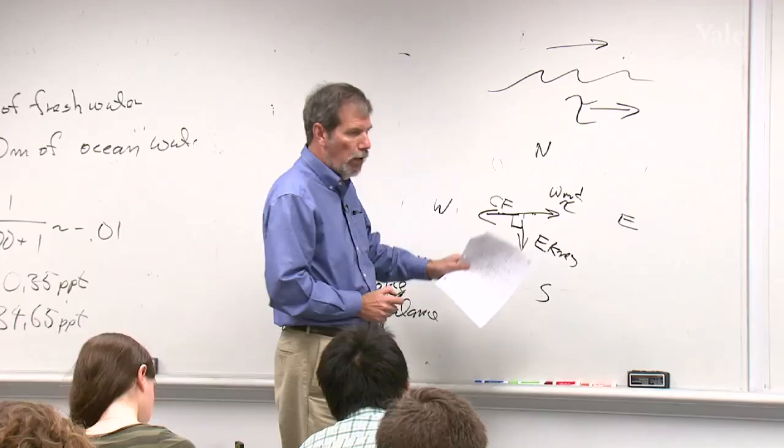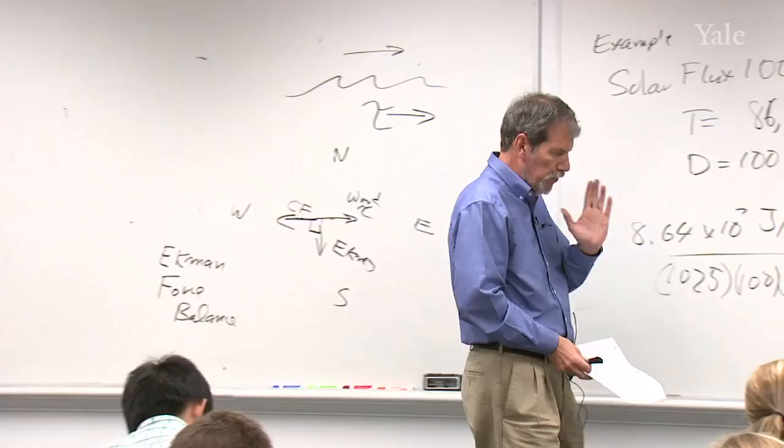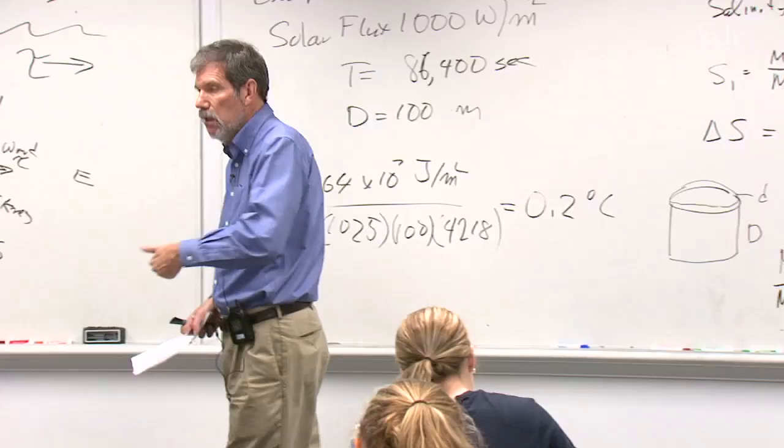And that's going to be equal and opposite to the wind stress itself. And so when you push on the water on a rotating Earth with the frictional stress from the wind, instead of moving in the direction you push, it moves at right angles. To the right in the northern hemisphere, to the south, I'm sorry, to the left in the southern hemisphere.